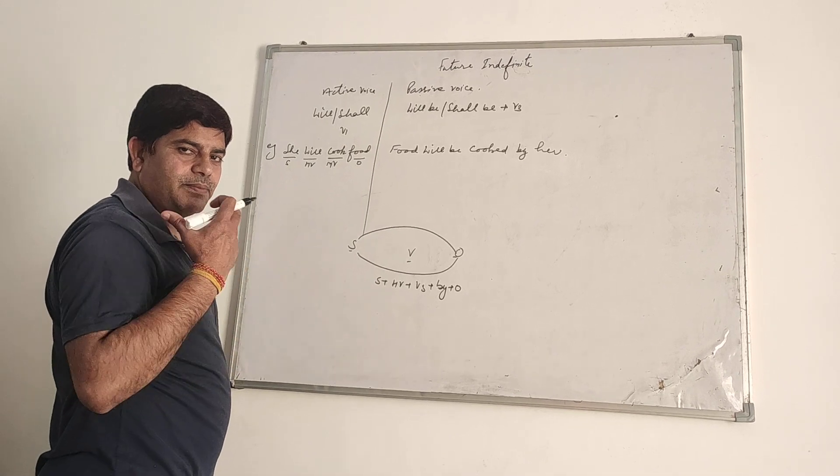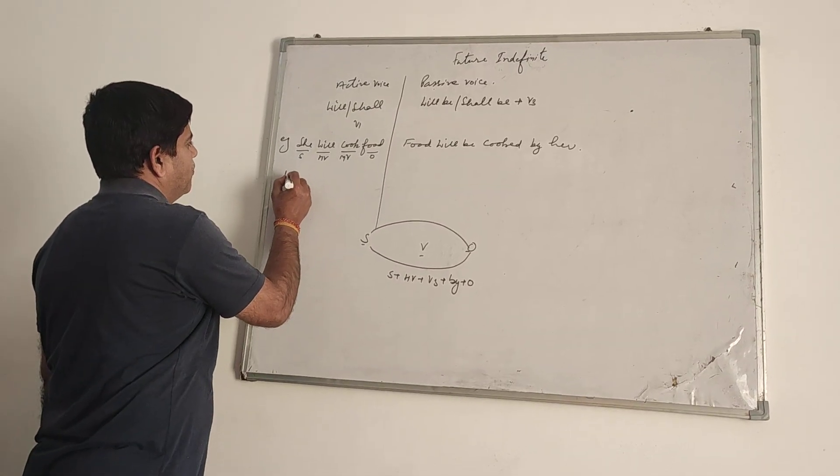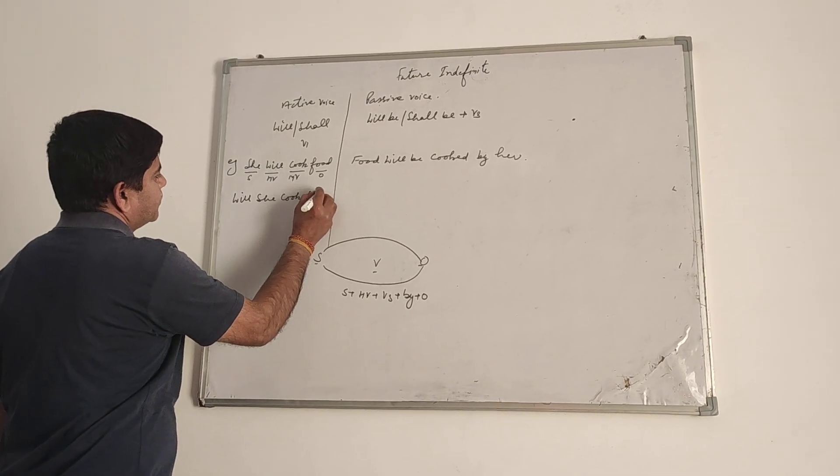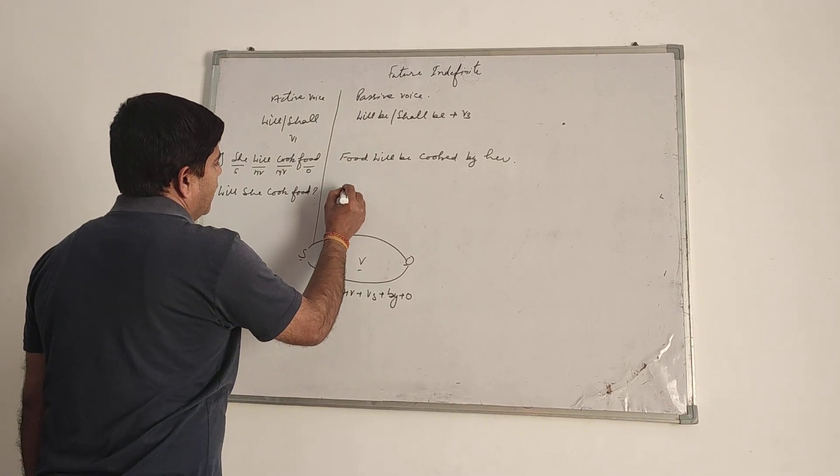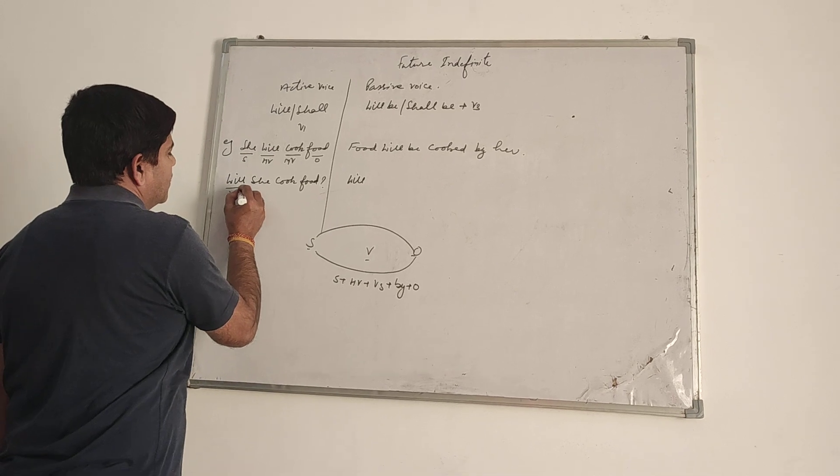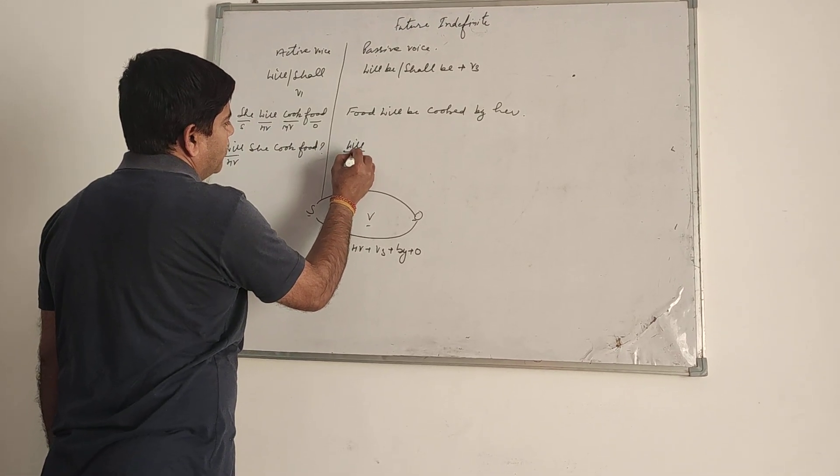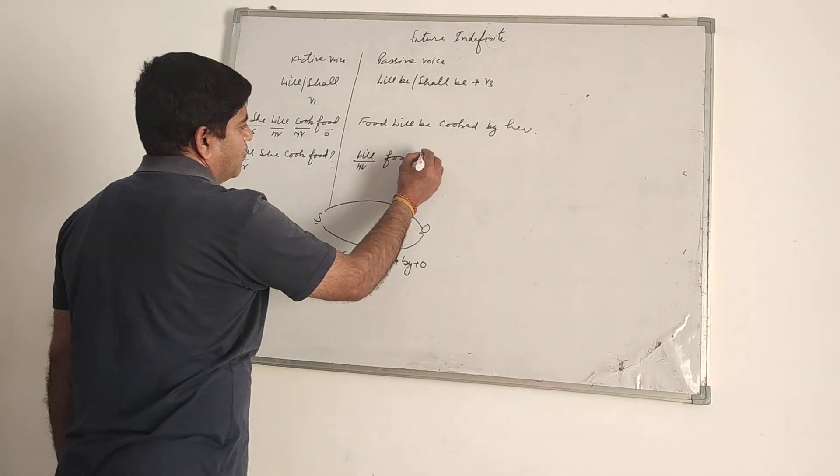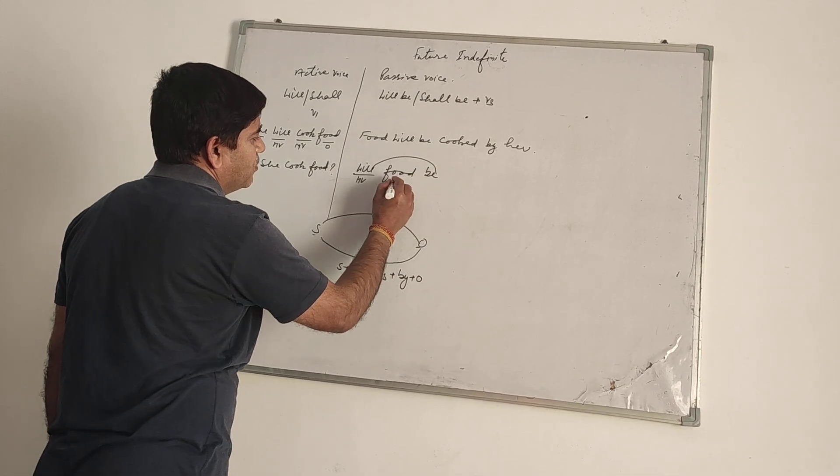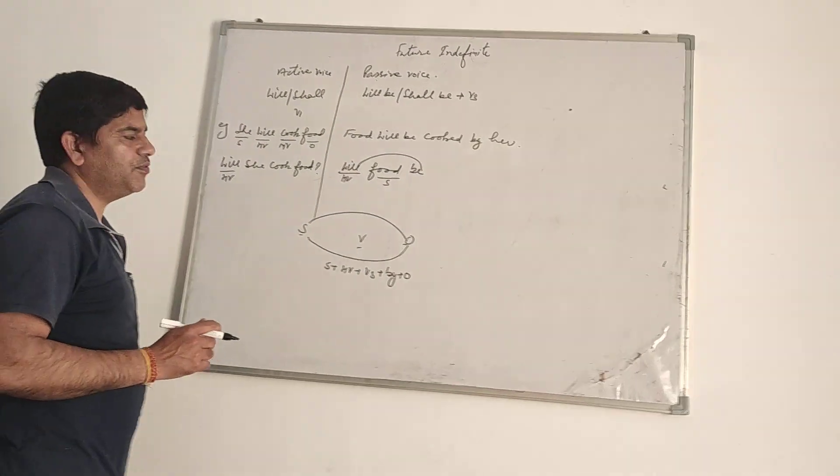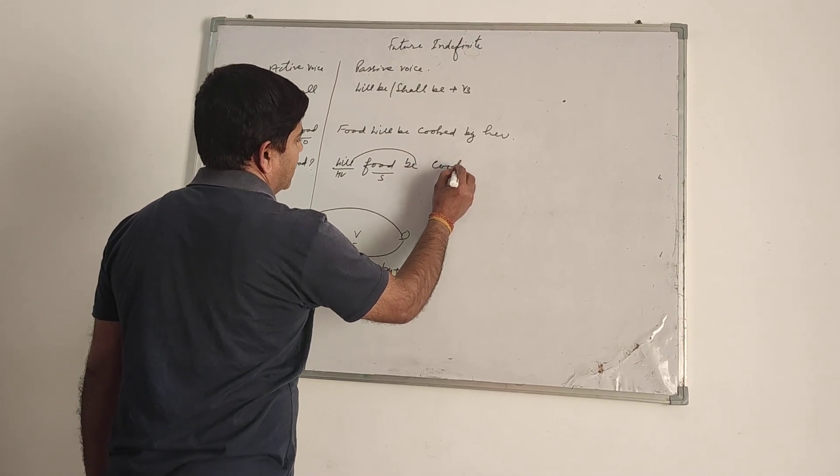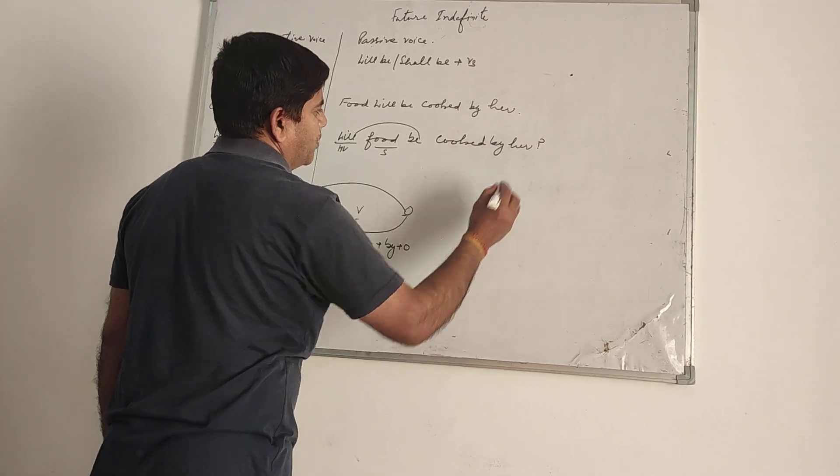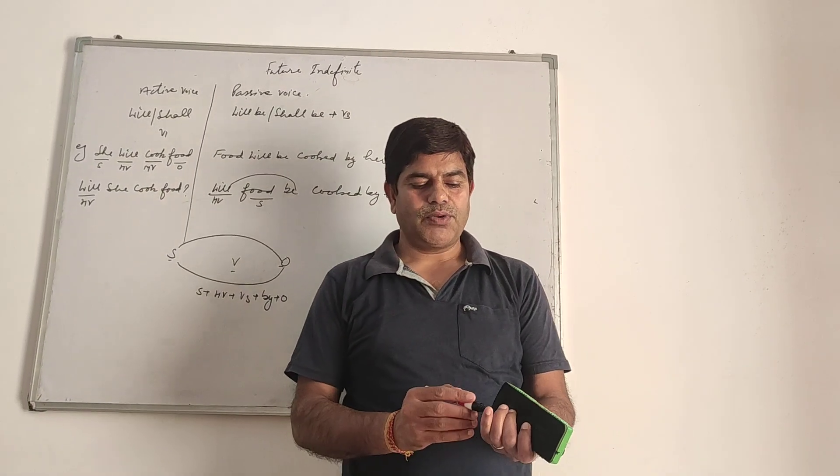I will write the same sentence in interrogative form. Will she cook food? So it will become will - because helping verb is there in interrogative, we have to put the helping verb in the very beginning. Will food - that is, object will change into subject. Because the rule is will be and shall be, that will come in the middle. Will food be cooked by her? Sign of interrogation is there.